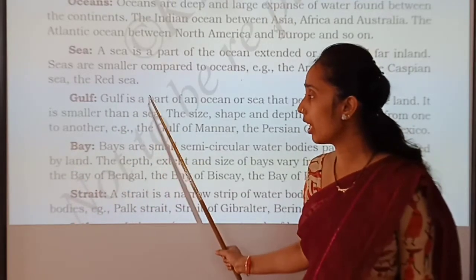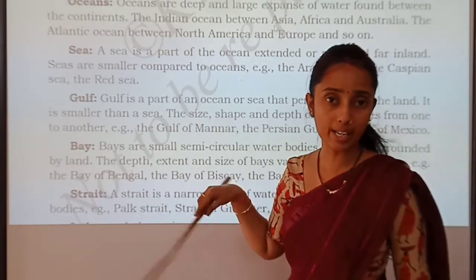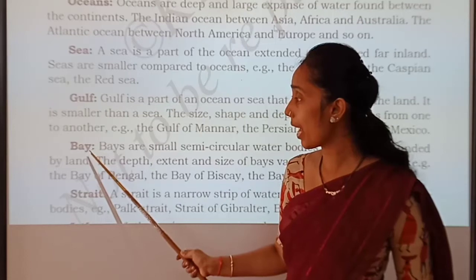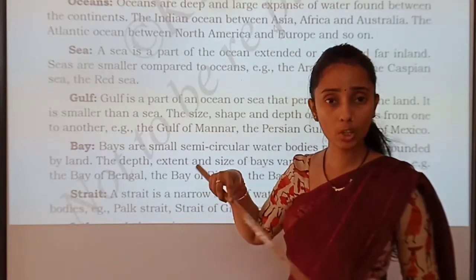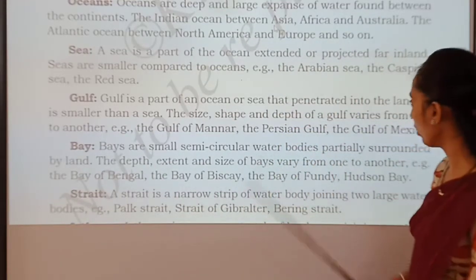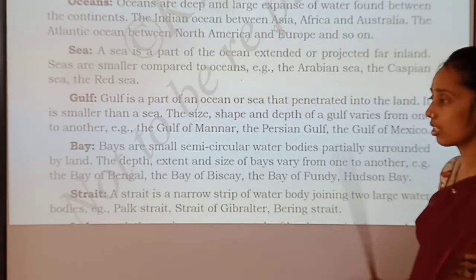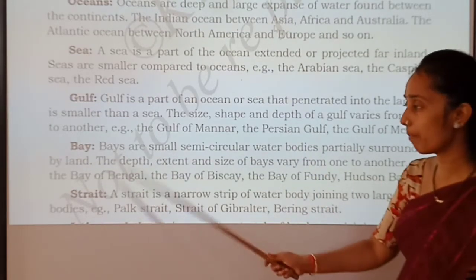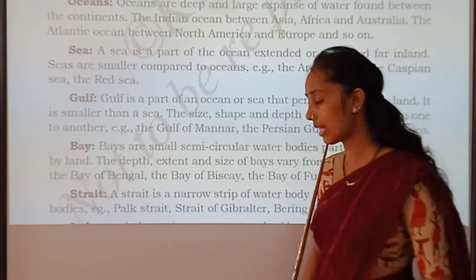What is the difference between gulf and bay? In a gulf, the land penetrates and separates two water bodies. Whereas bay is a semi-circular water body where you will get to see only a very small part of land. The depth, extent and size of a bay varies from one to another. Examples are: the Bay of Bengal, Bay of Biscay, Bay of Fundy and Hudson Bay.